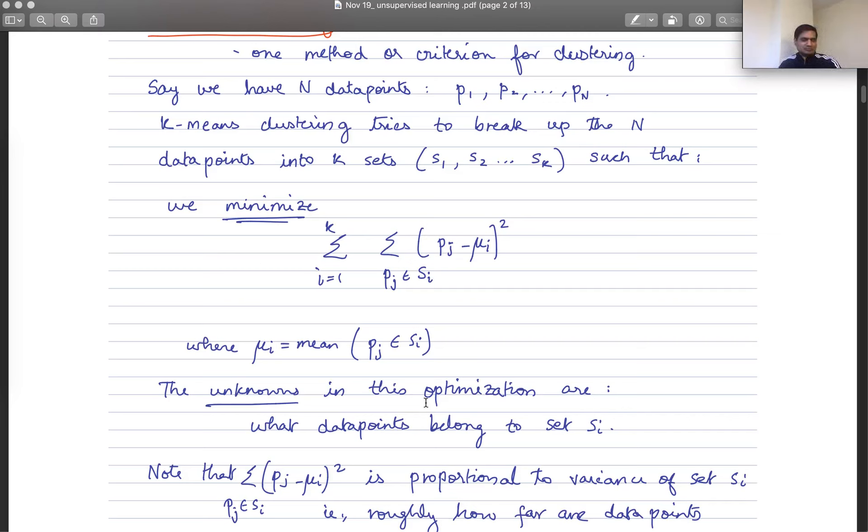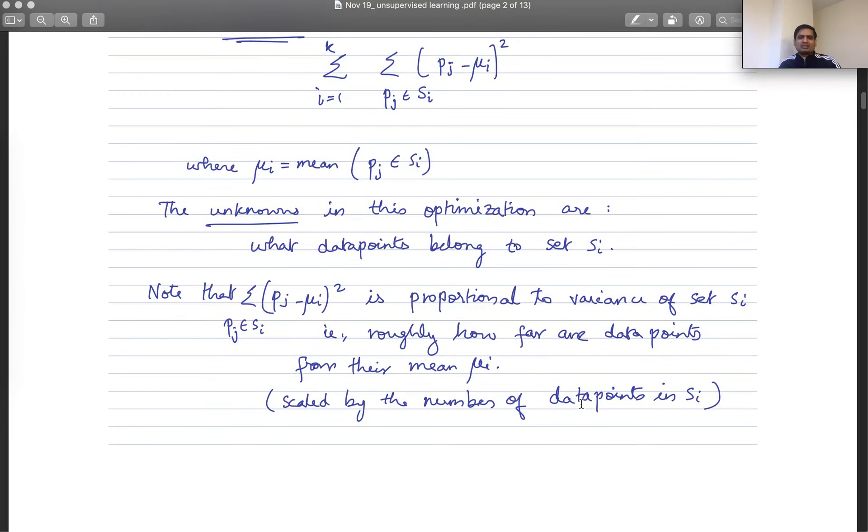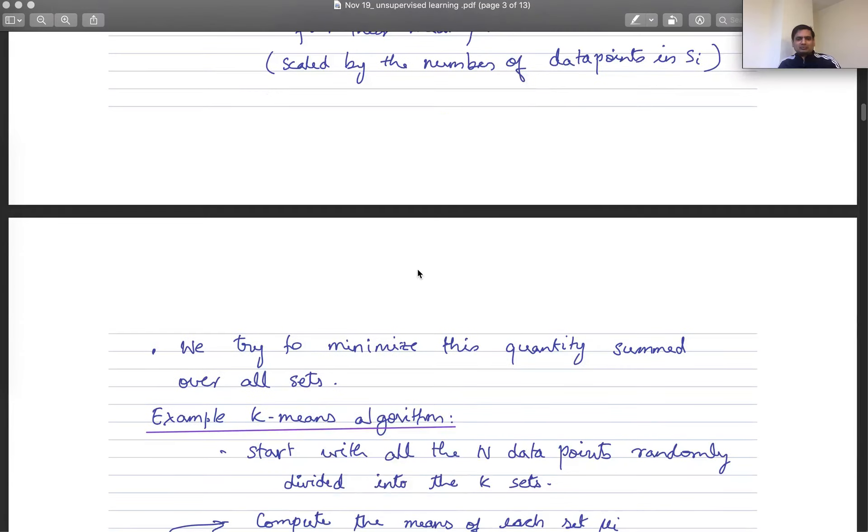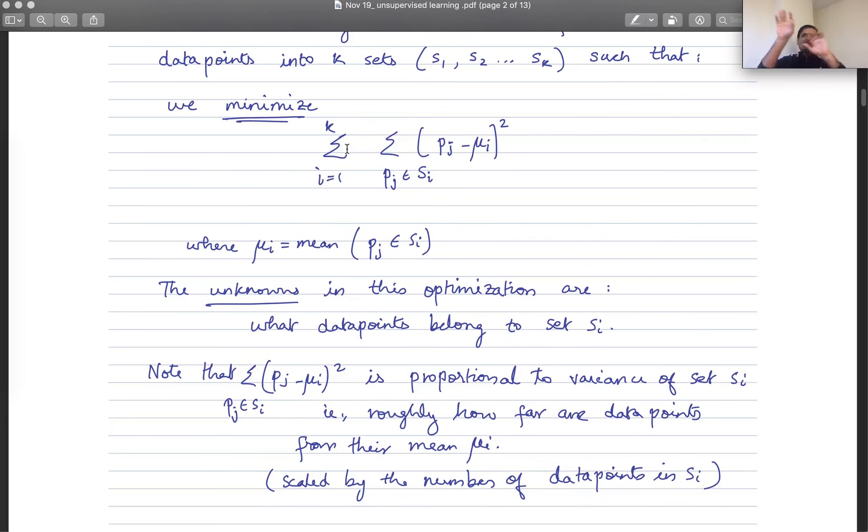So that's the intuition for this quantity. What are the unknowns in this optimization? It's a bit weird. The unknowns in this optimization are actually which data point belongs to which set. So it's this set membership that is the unknown. So data point number one, does it belong to the first set, second set, third set? These sets are what we call clusters. So these sets are the clusters. The unknowns are, do we assign the first data point to the first cluster, the second cluster, the third cluster, and so on.